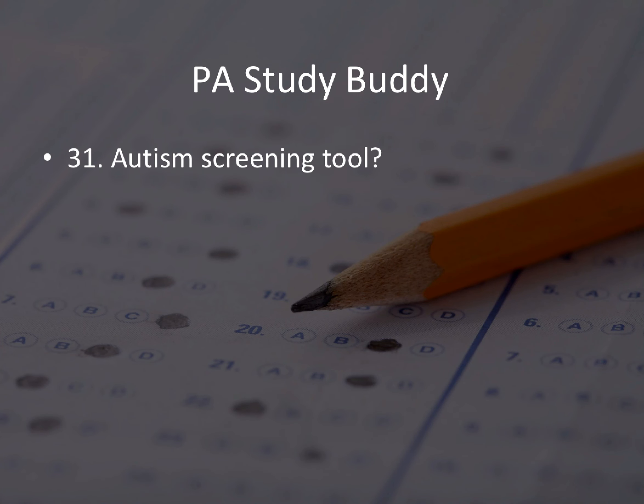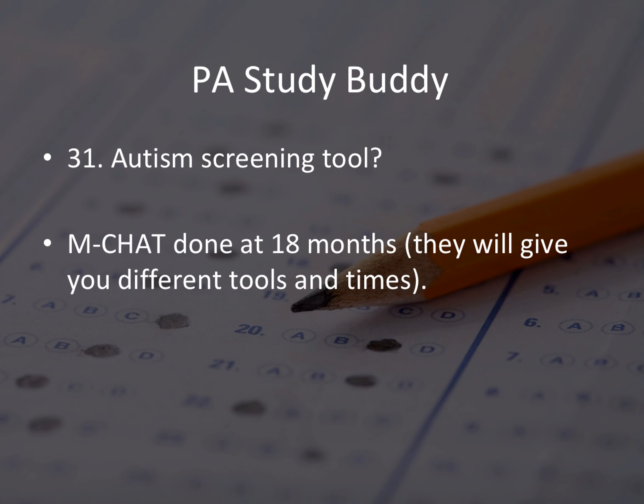Question thirty: autism screening tool. They'll tell you the kid is autistic and ask which test will best diagnose this patient. The answer is M-CHAT, done at 18 months. They'll give you different tools and times, but the answer is M-CHAT at 18 months.